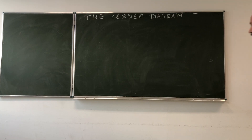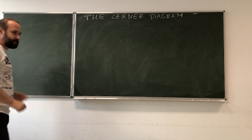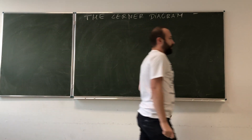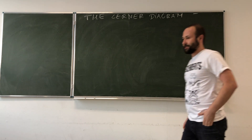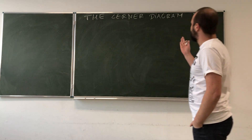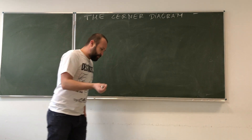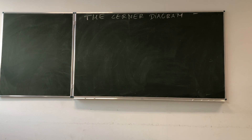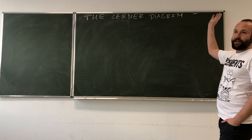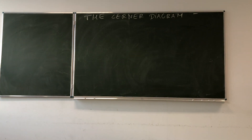Before we can move on with our considerations for the neoclassical model of training, we should learn one very useful tool used in the analysis, which is the Lerner diagram. As you remember, our assumption of constant returns to scale allows us to deal with one unit of production and then we can generalize our results for as many units as we want.